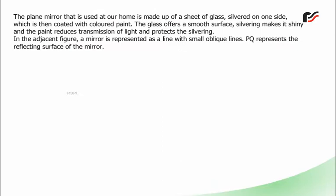The plain mirror that is used at our home is made up of a sheet of glass silvered on one side, which is then coated with colored paint. The glass offers a smooth surface. Silvering makes it shiny and the paint reduces transmission of light and protects the silvering. In the adjacent figure, a mirror is represented as a line with small oblique lines. PQ represents the reflecting surface of the mirror.